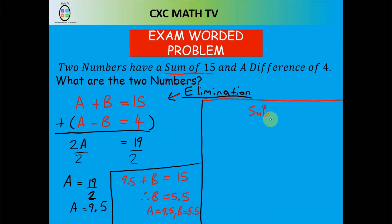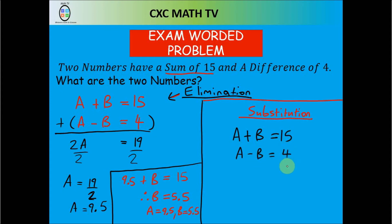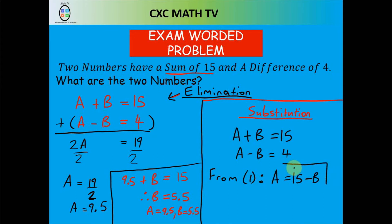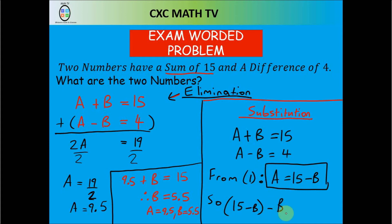Let's now use the substitution method. We had a plus b equals 15 and a minus b equals 4. We choose a variable to make the subject — from equation 1, let's make a the subject. Bringing b to the other side: a equals 15 minus b. Now substitute this into the second equation, replacing a: 15 minus b, minus b equals 4.